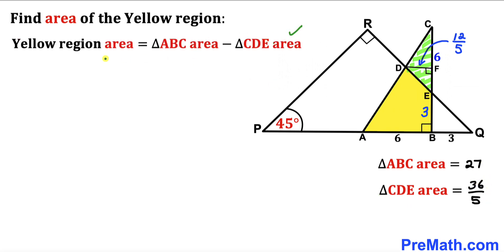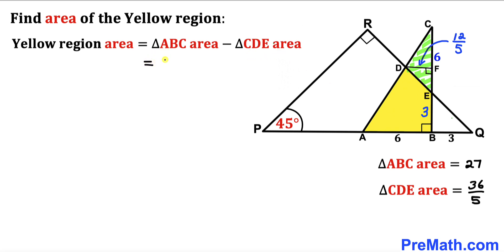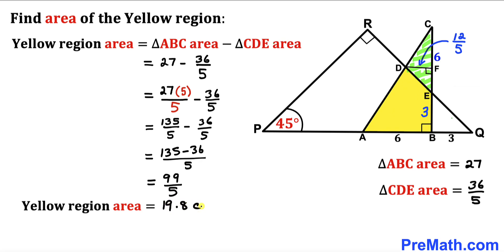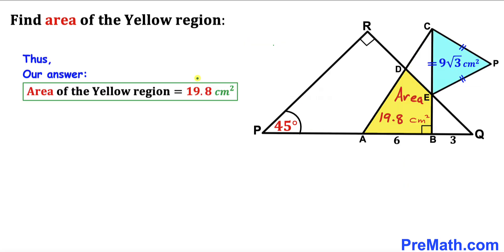For the final step, the area of the yellow shaded region equals area of triangle ABC minus area of triangle CDE: 27 − 36/5 = 135/5 − 36/5 = 99/5 = 19.8 centimeters squared. The area of the yellow shaded region is 19.8 centimeters squared.